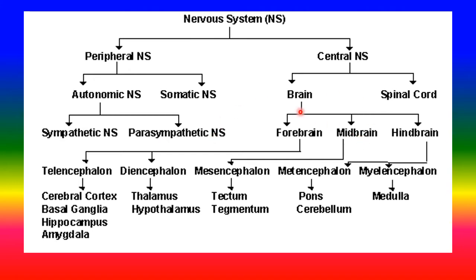The brain is divided into three important parts: the forebrain, midbrain, and hindbrain. The forebrain is divided into the telencephalon — comprising the cerebral cortex, basal ganglia, hippocampus, and amygdala — and the diencephalon, comprising the thalamus and hypothalamus. The midbrain contains the mesencephalon including the tectum and tegmentum. The hindbrain is divided into the metencephalon (pons and cerebellum) and myelencephalon (medulla).